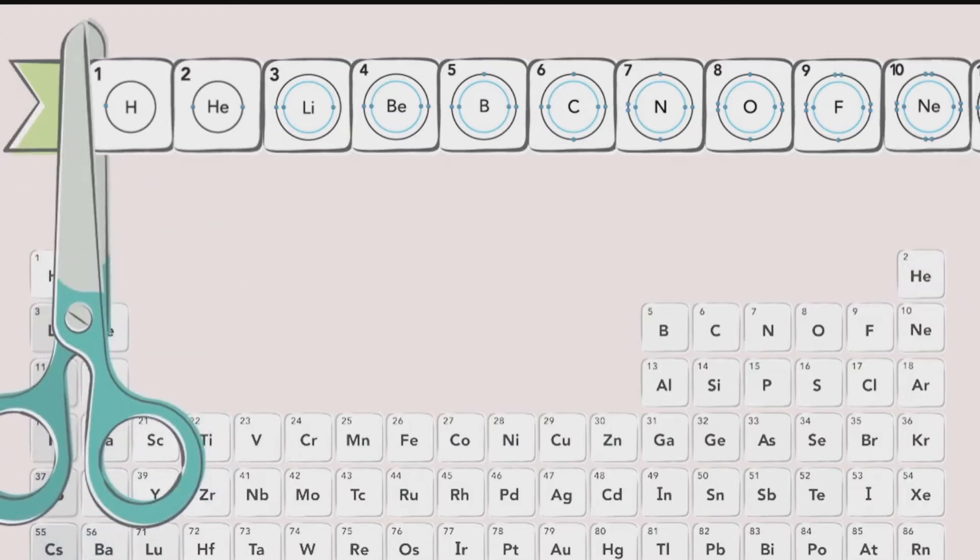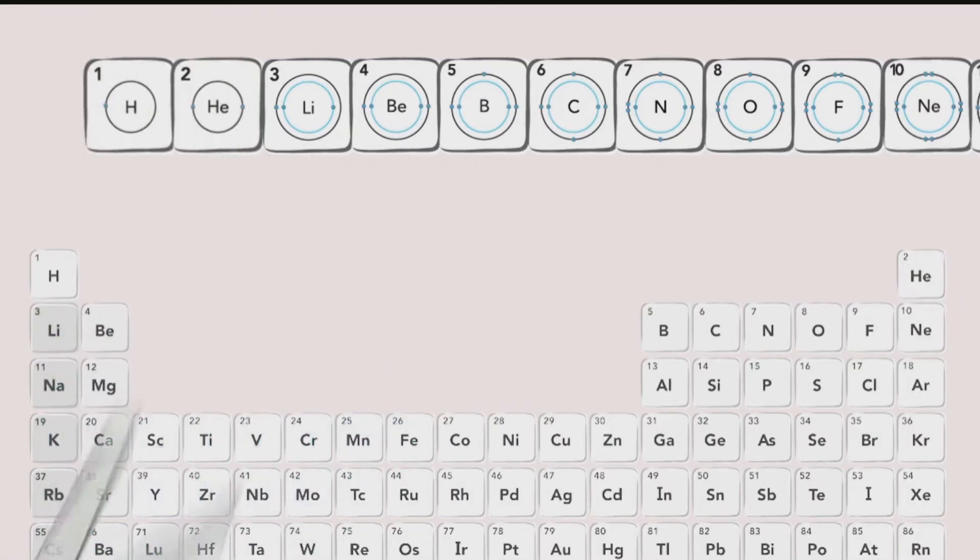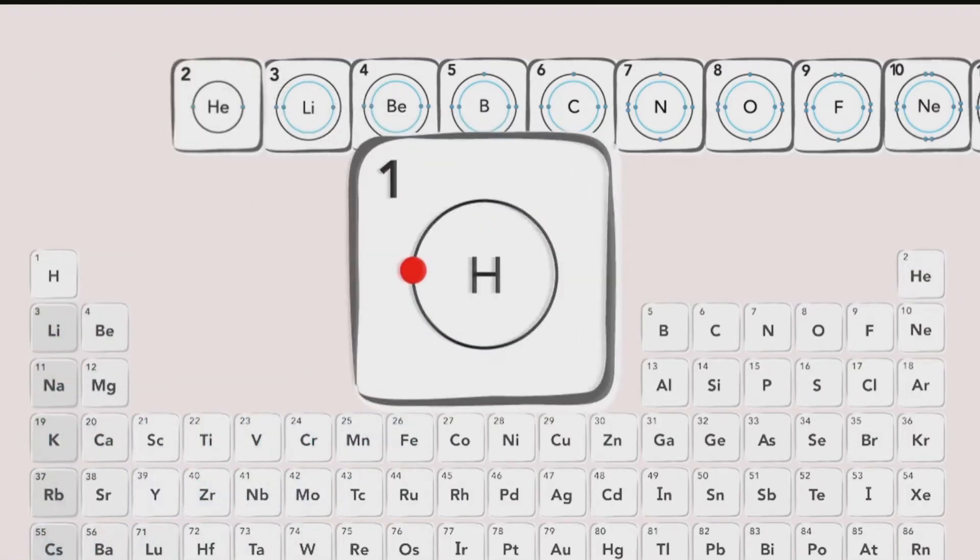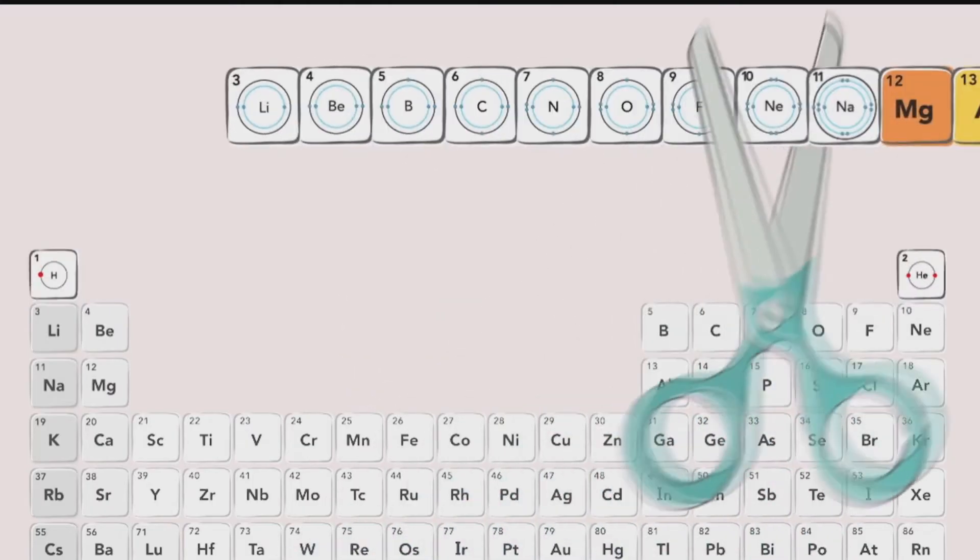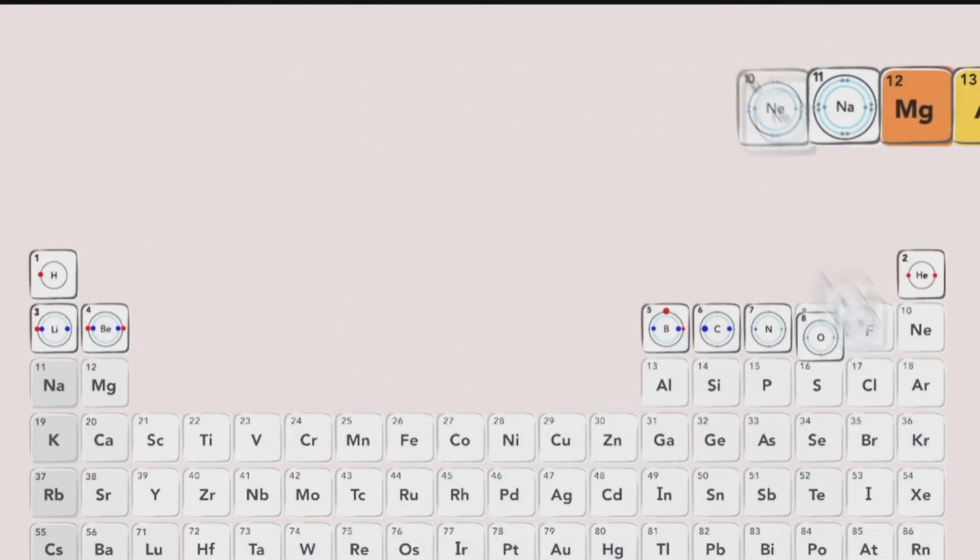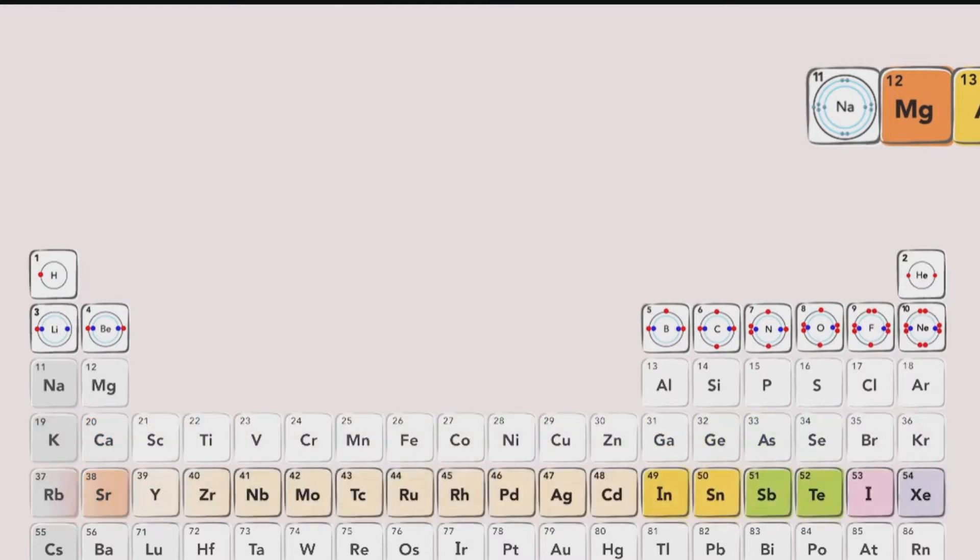The first energy level in an atom can only hold two electrons, so only hydrogen and helium are placed within the first period of the table. The second energy level can hold up to eight electrons, and higher levels can hold even more.